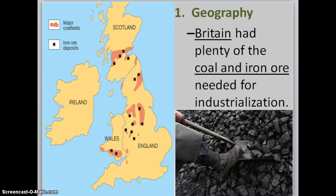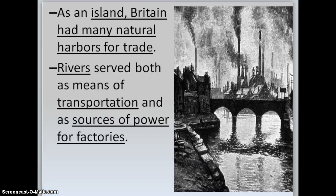The first reason industrialization started in Britain was geography. Running steam engines required a lot of coal, and Britain had tons of it. Making big engines, ships, and tools required iron ore, which England also had in abundance. Being an island gave it many natural harbors for safe trading, and its rivers were important for transportation and water power to run the large factories being built.